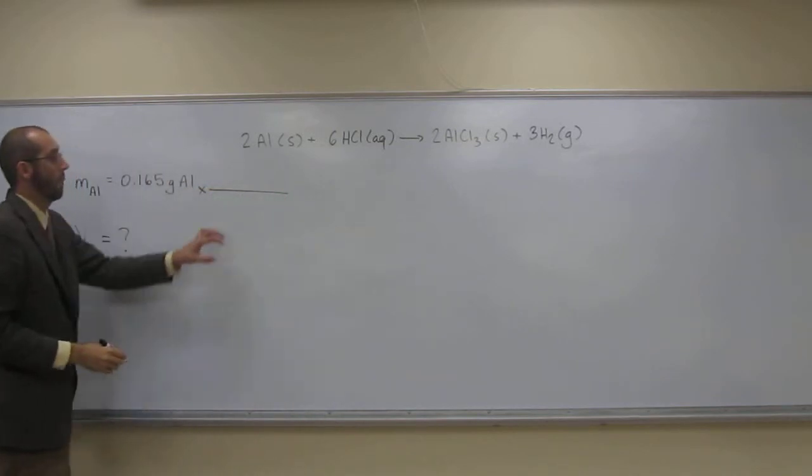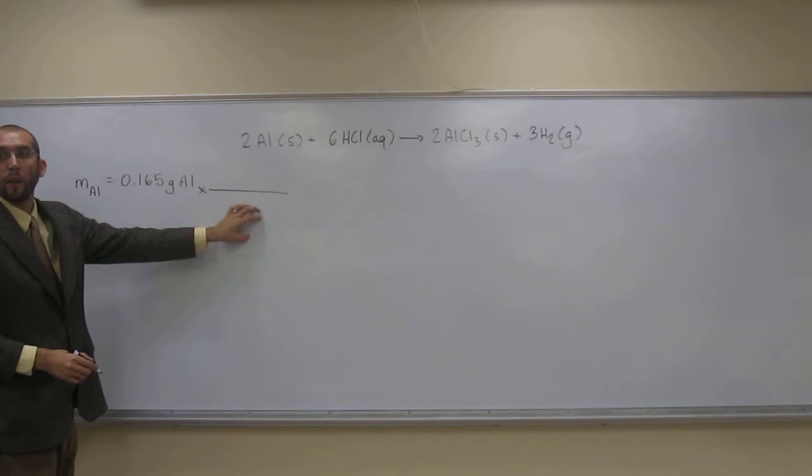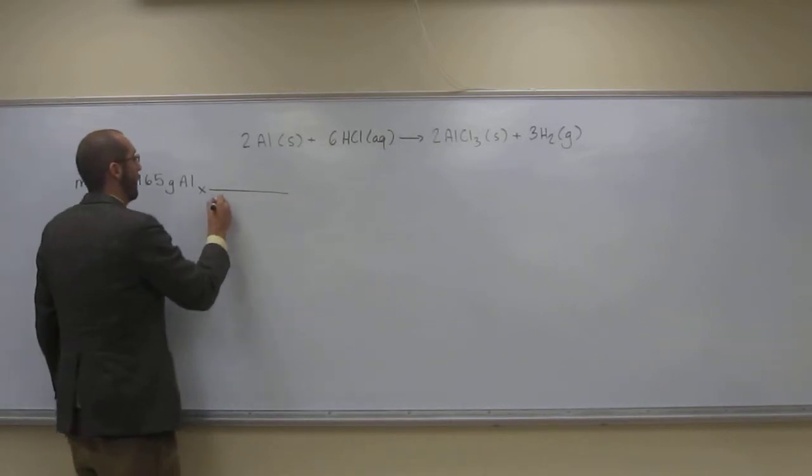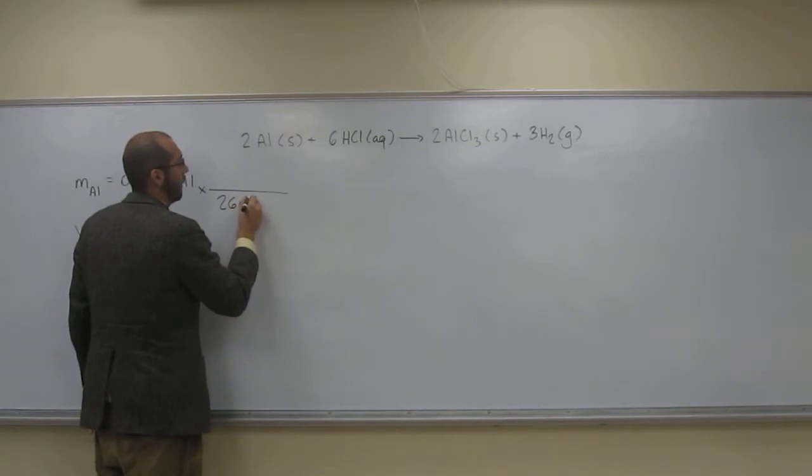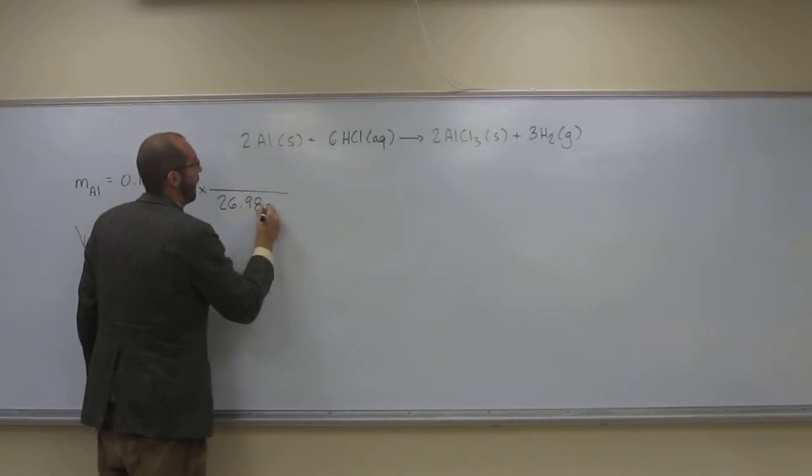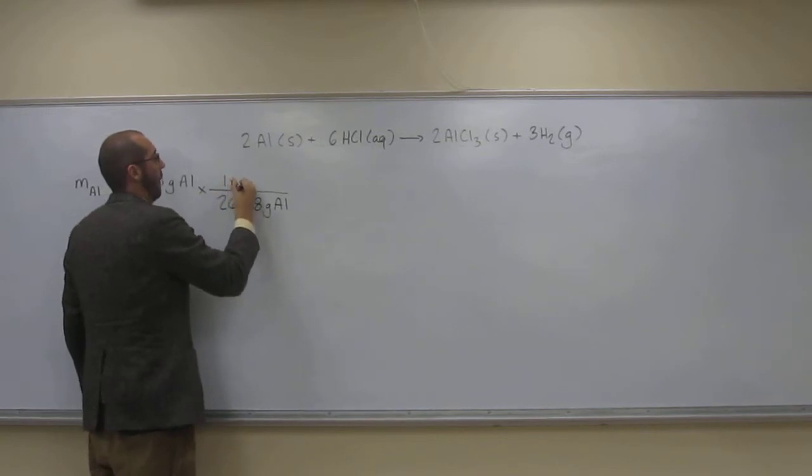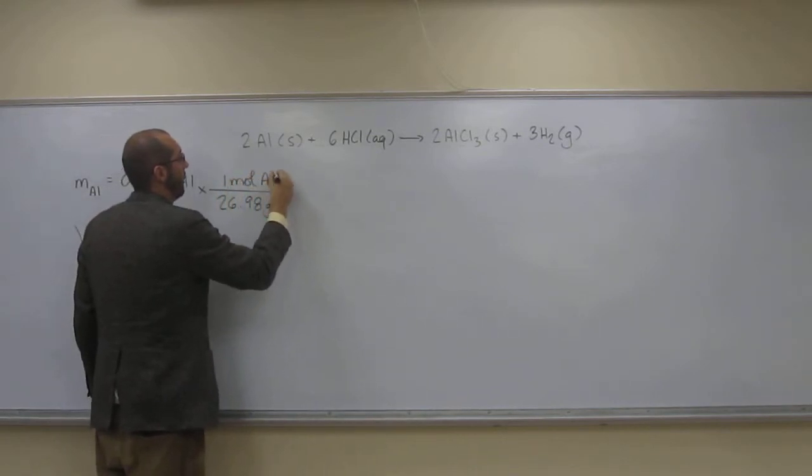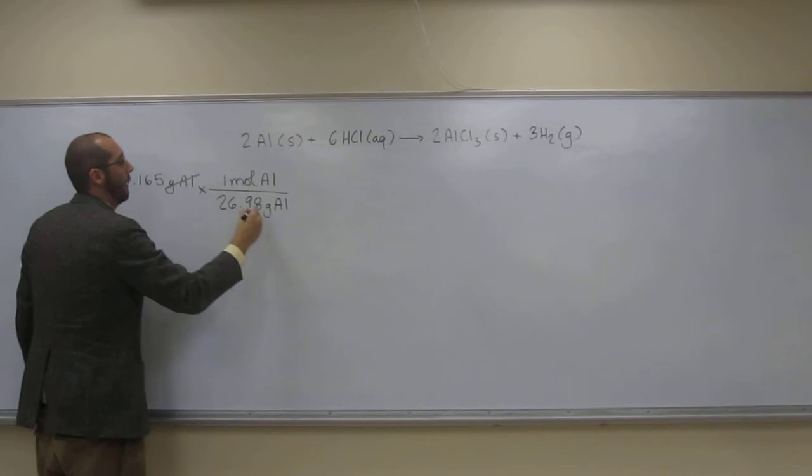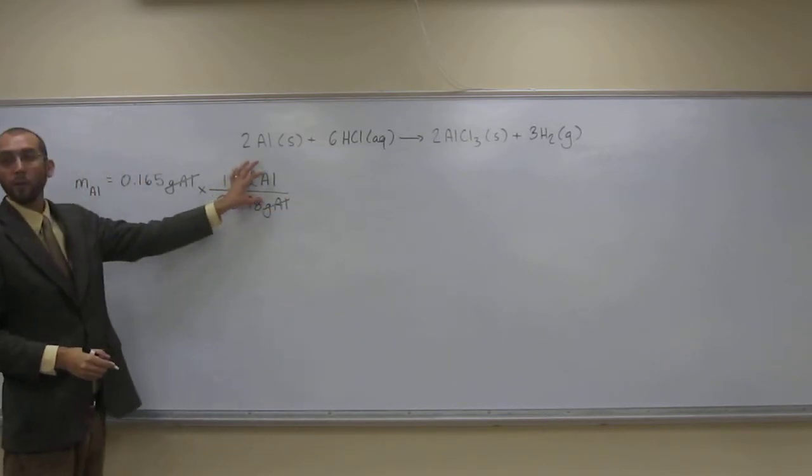So what would we put at the bottom here? Well, what is it? 26.98 grams of aluminum, and at the top? One mole of aluminum. So watch. Cancel, cancel. So we're at moles of aluminum.